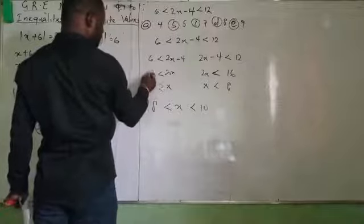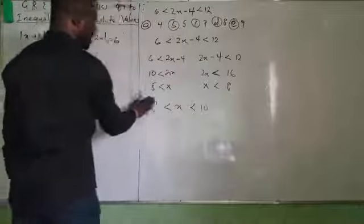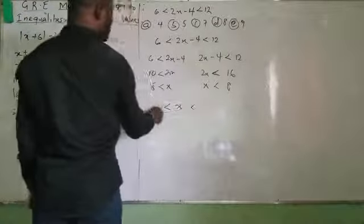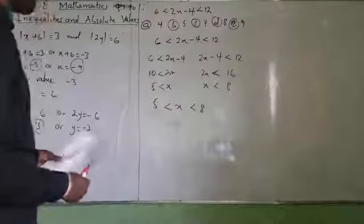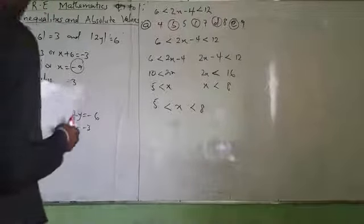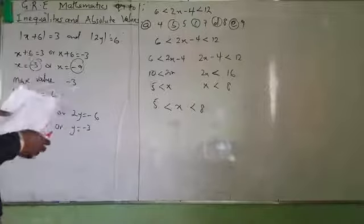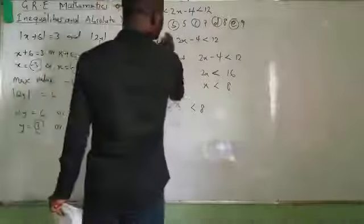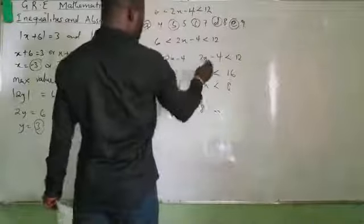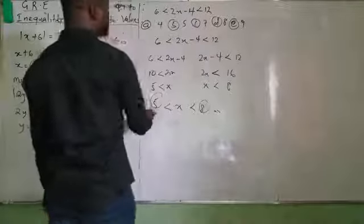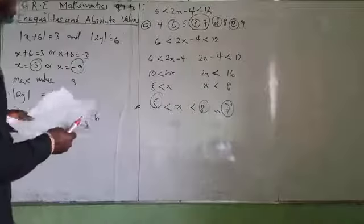So I am talking about 5 and 8 as the boundaries. The possible values within the range: 4 is outside, 9 is outside, 8 itself cannot be included because of strict less than. The answer is 7, which falls within the range.